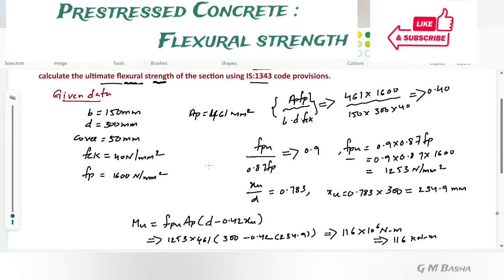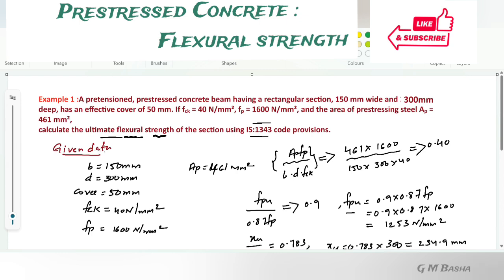This is very easy and simple to calculate the ultimate flexural strength by using the IS codal provision, that is 1343.